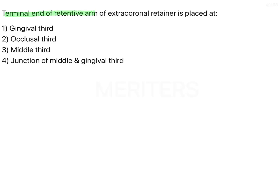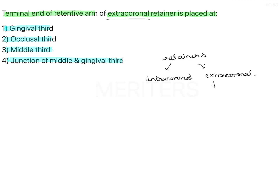The terminal end of the retentive arm of an extracoronal retainer is placed at the gingival third, occlusal third, or middle third in junction of middle and gingival third. This is a very subjective question but still very direct. We have retainers — direct retainers are of two types: intracoronal and extracoronal. We are talking about extracoronal retainers or clasp assemblies.